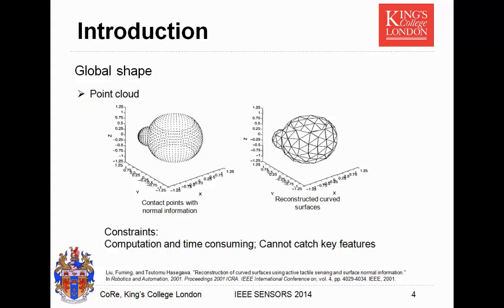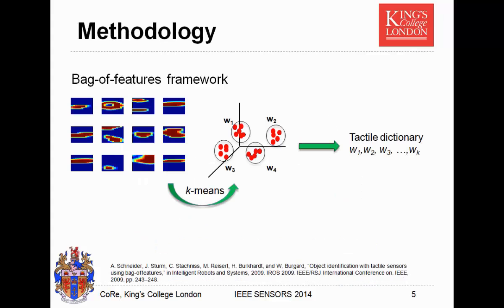We propose a method called the bag of features framework. This framework comes from computer vision. On the left, we can see there are many tactile readings. We treat them as images, and from these images we can extract many features. We can use these features as words, cluster them, and get a tactile dictionary. From this dictionary, we can assign words to different objects and use those words to describe each object.